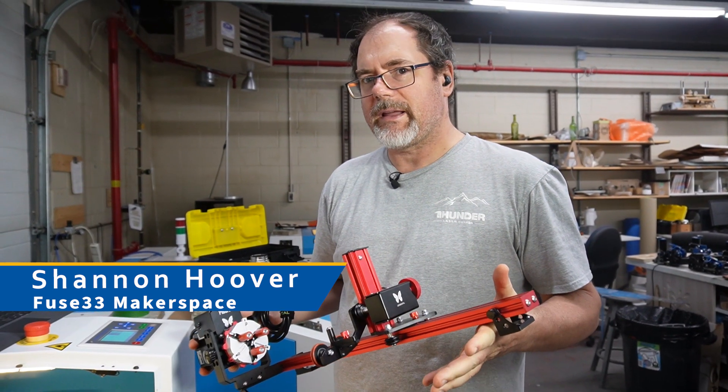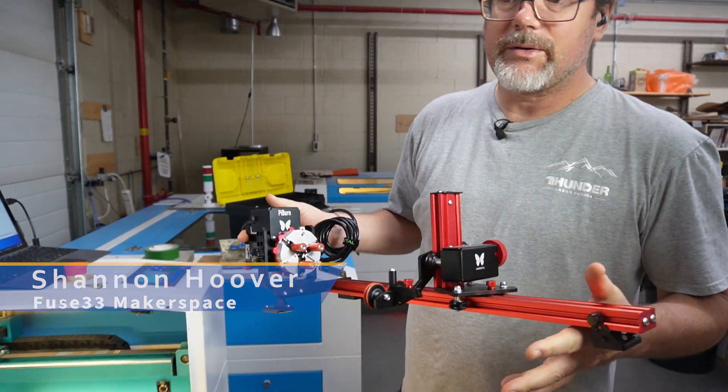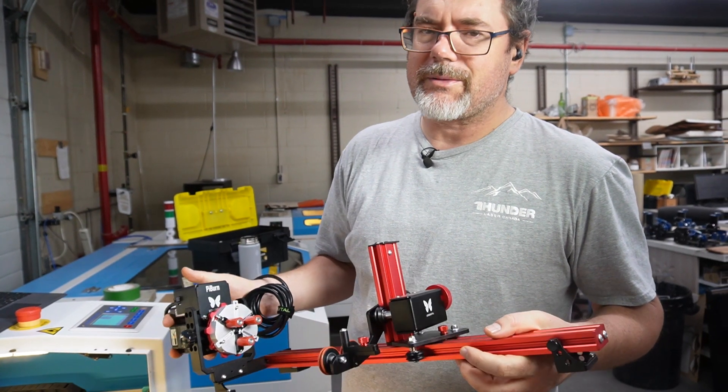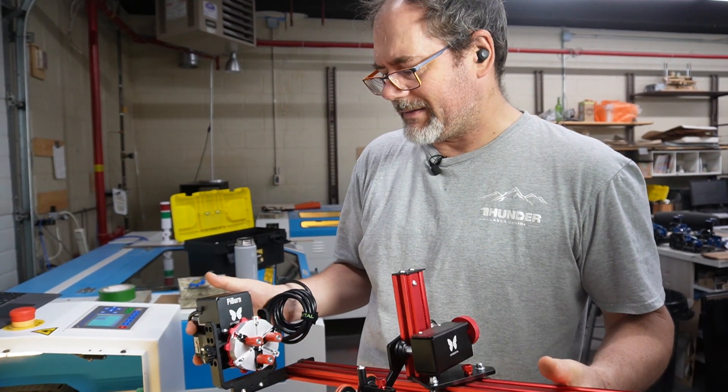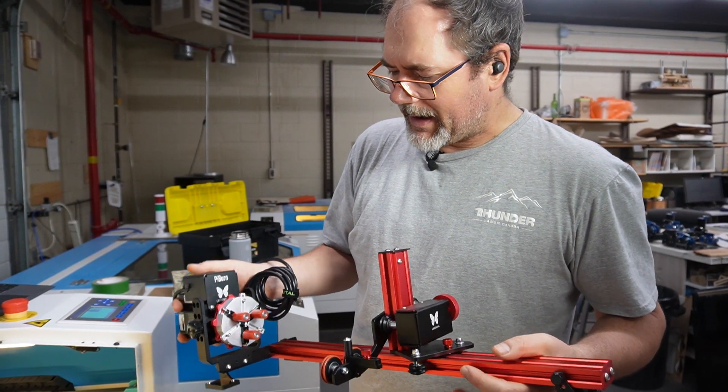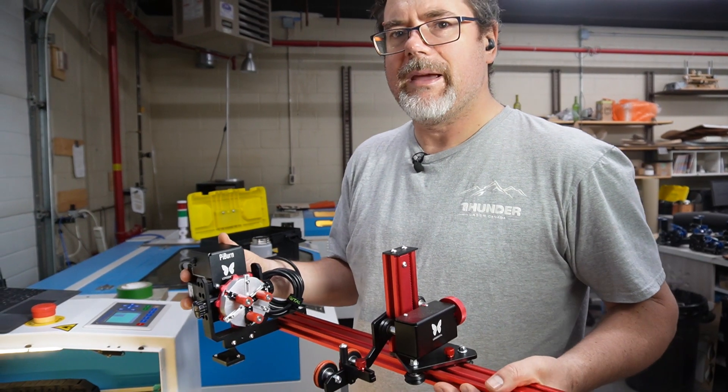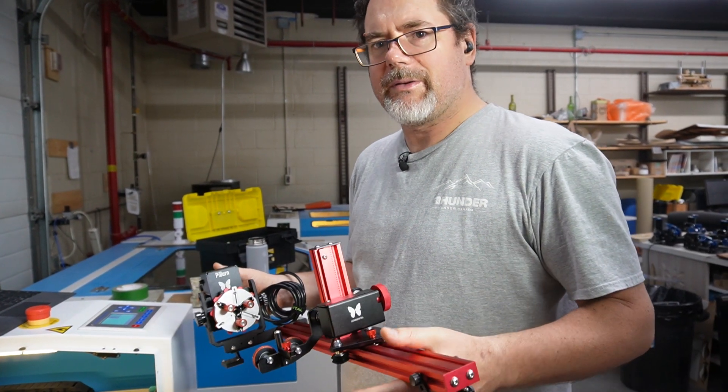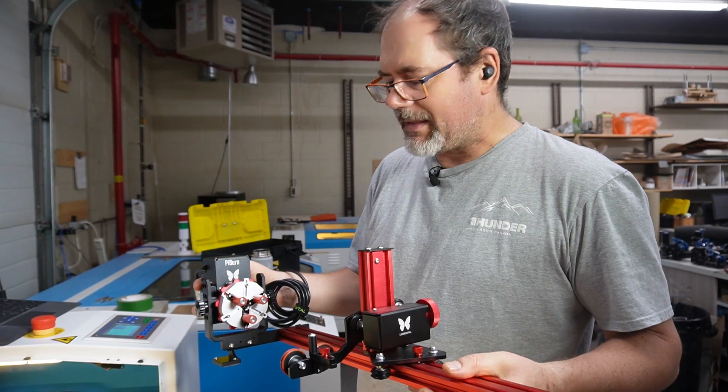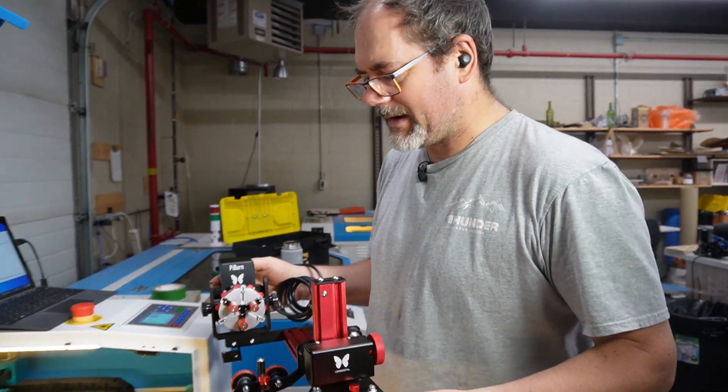Hi, so today we're going to be testing the Pyburn grip. This is the newest rotary from Lens Digital Pyburn. I've often been a fan of the chuck rotaries over the roller rotary just because it's easier to do wraps and you can do kind of weirder things with it. But this is trying to kind of get the best of both worlds. It's trying to be a rotary that's really good at doing mugs as well as be able to do full wraps and basically anything. So I'm kind of excited to give this a try. Let's try it out.